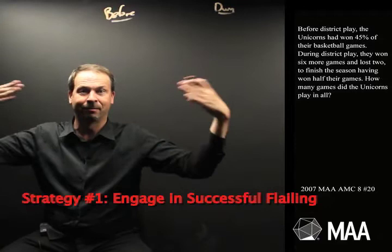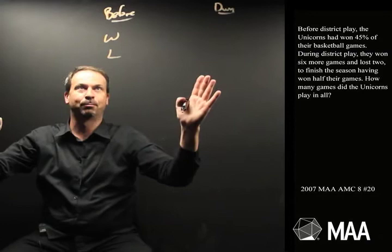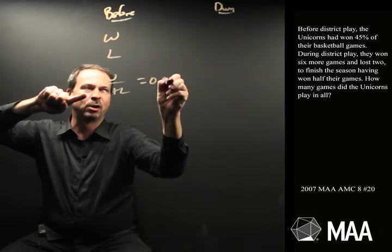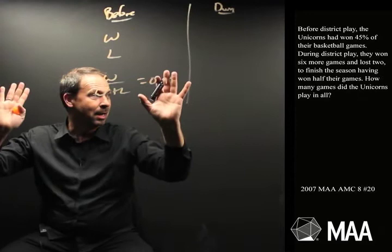They won some number of games W, they lost some number of games L, and we know the number of games they won out of all the games they played is 45%, that is 0.45 of the games were won. So I could write that as an algebra equation. I don't know if algebra is going to be the nicest way to do this, but the number of wins out of all the games played is 0.45. Doesn't look pretty, but at least it's the information.